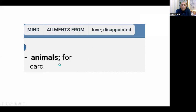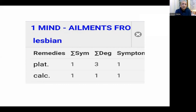There is another rubric 'Elements From, Disappointment in Lesbians' — only two remedies: Platina and Calcarea. Platina was in the earlier rubric but Calcarea was not. This one is specifically related to a sexual relationship, unlike the earlier same-sex friendship rubric. These things we have to take into consideration and understand the depth.